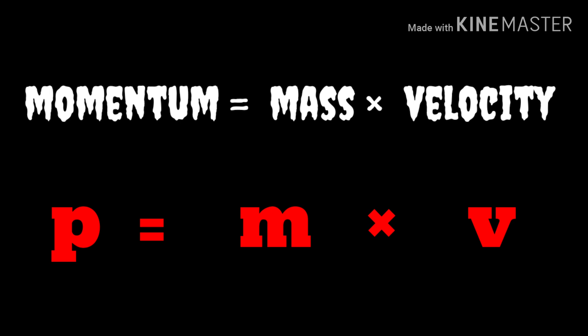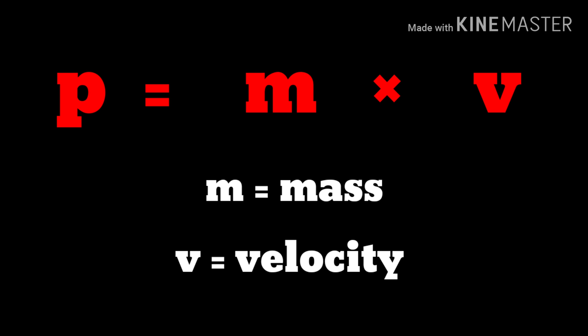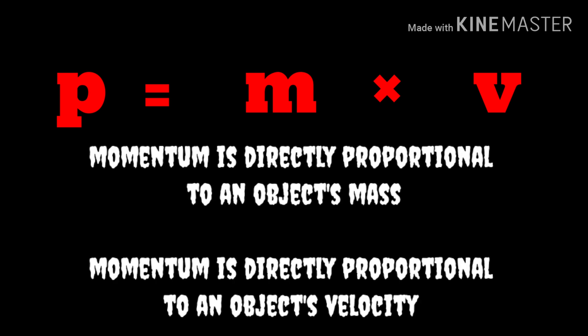From this we can form a simple formula: momentum equals mass times velocity. We use lowercase p as a symbol for momentum, so this equation can be written as p = m × v, where m is the mass and v is the velocity. The equation illustrates that momentum is directly proportional to an object's mass and directly proportional to the object's velocity.